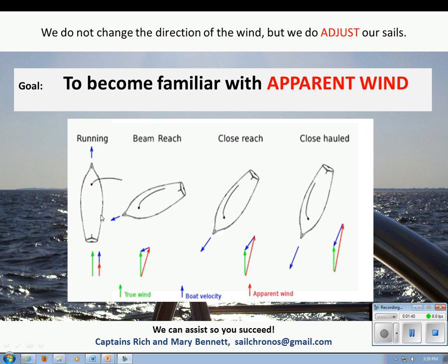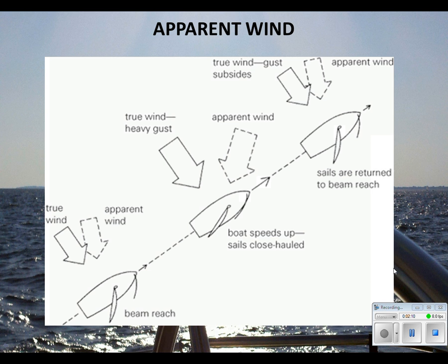On your boat, the apparent wind is observed and experienced directly and used in your instruments. Your boat carries a wind vane that points to the apparent wind, not the true wind. Your boat also has an anemometer which measures the apparent wind strength, not the true wind strength. You will also notice the apparent wind implications as you trim your sails.